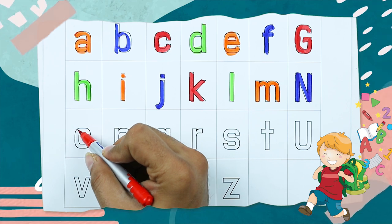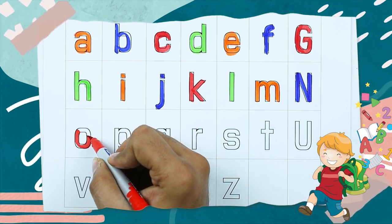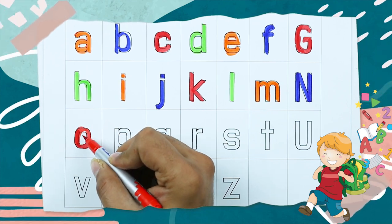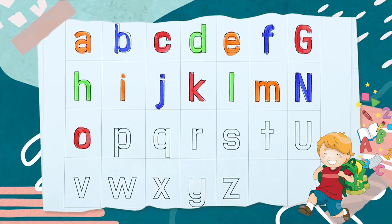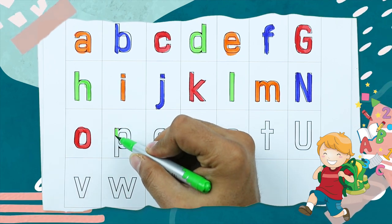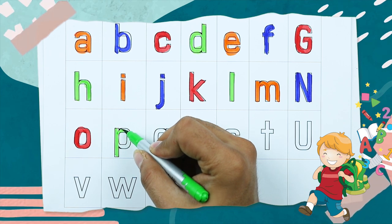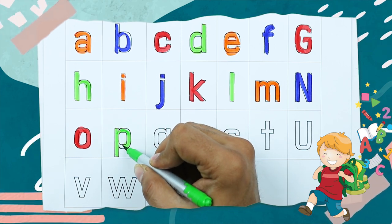O, it's small o, O for octopus. P, P, P with green color, P for parrot.